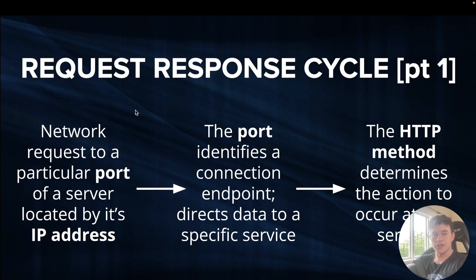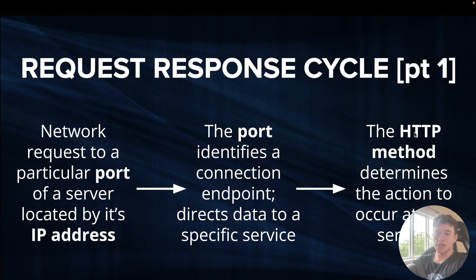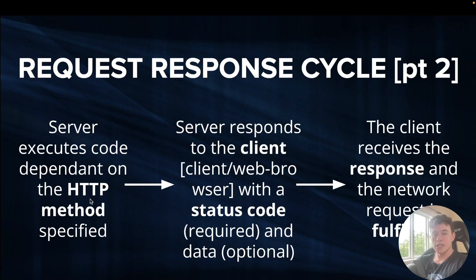Here's the full request-response cycle. We start by generating a network request to a particular port of a server, located by its IP address or URL. The port identifies a connection endpoint — it more specifically navigates us to a connection endpoint, or directs the data to a specific service within the server. After that, the HTTP method determines the action to occur at that service. For example, at a service handling user login, the method might specify whether we're deleting, creating, or updating the login, and the server executes code accordingly.